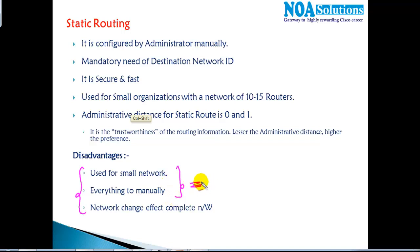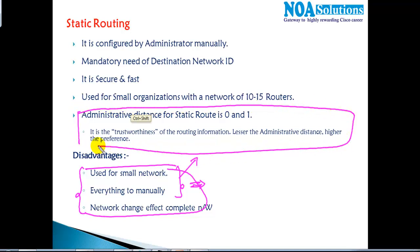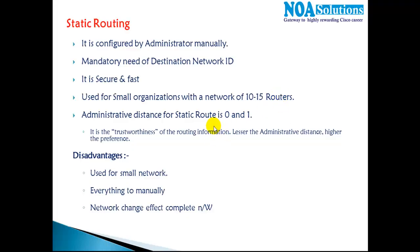This makes static routing not much applicable or not much used in production networks. We prefer to go with dynamic routing where most of the process is automatic. These are the major disadvantages which make static routing less applicable in production networks.